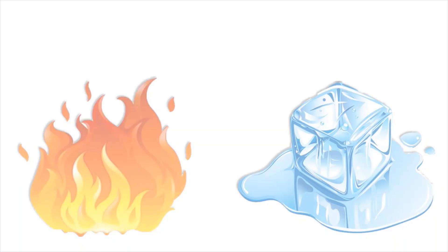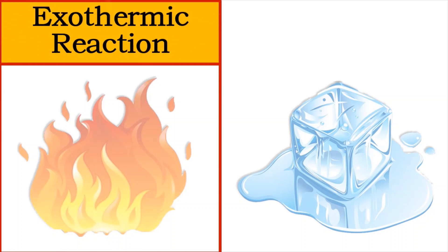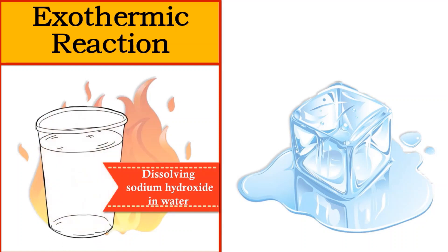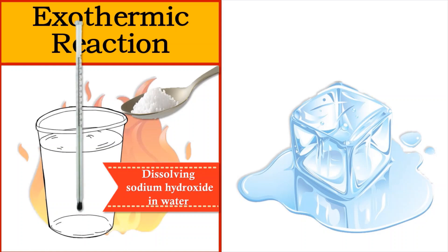To study the exothermic reaction, you can dissolve sodium hydroxide solid into water. We need 50 cm³ of water inside a plastic or polystyrene cup, a spatula of sodium hydroxide solid, and a thermometer. The thermometer is placed inside the water to get the initial temperature. Then, a spatula of sodium hydroxide solid is added to the water and the mixture is slowly stirred with the thermometer. The highest temperature obtained is recorded.